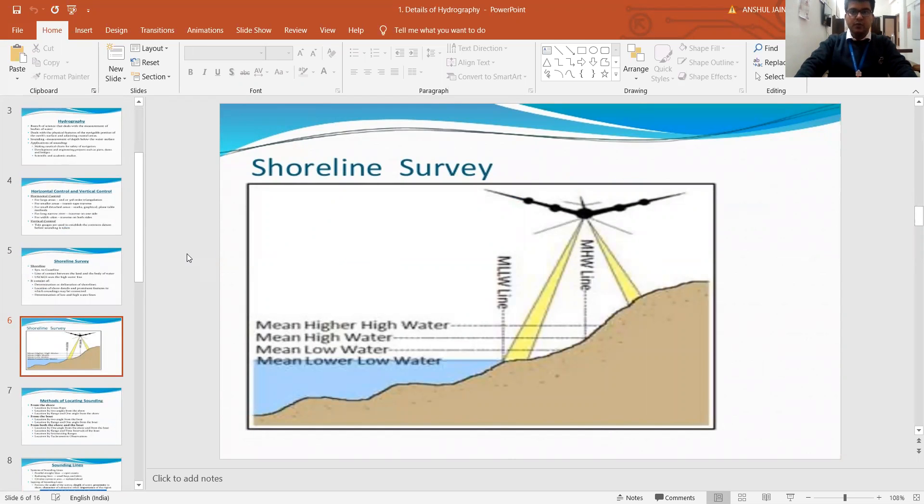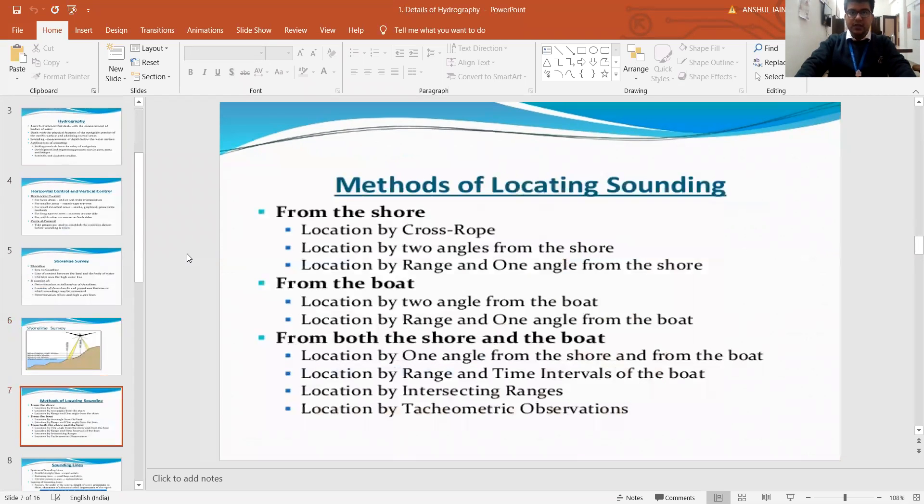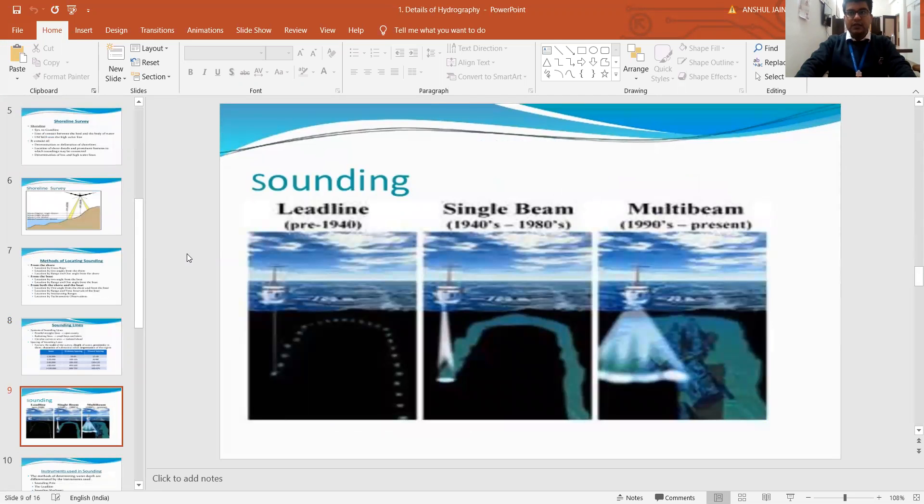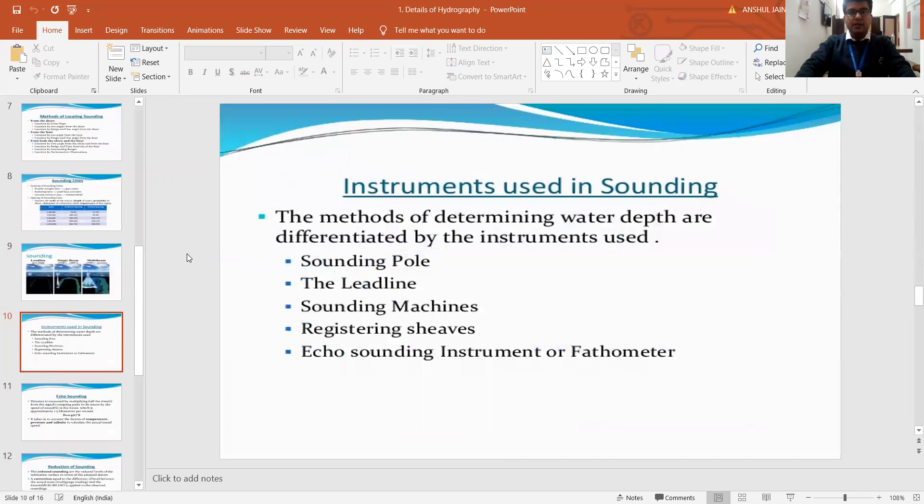What do we understand by the term shoreline survey and why is it done, then we have snapshots of remote sensing work done for the shoreline survey, the various methods of locating the sounding in three categories with subcategories, the various ratios chosen for considering this sounding method, the images showing the various advancements in the field of sounding.